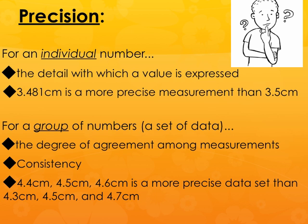For example, if you had a data set containing 4.4, 4.5, and 4.6 centimeters, that is a more precise data set than 4.3, 4.5, and 4.7. The second set is more spread out, and the earlier set is closer on a number line. So when looking at an individual number, precision is how many decimal places you can read; in a data set, it's how close the numbers are to each other.